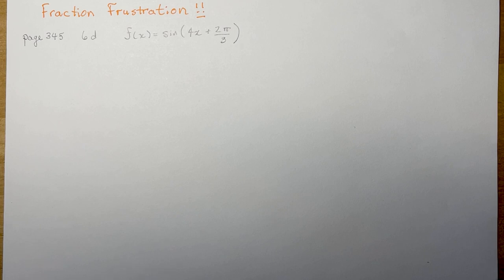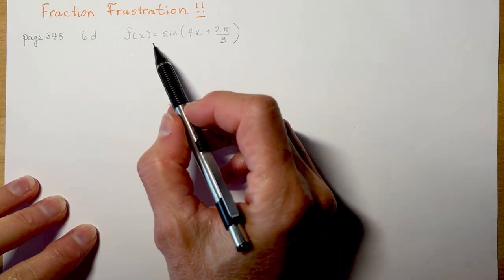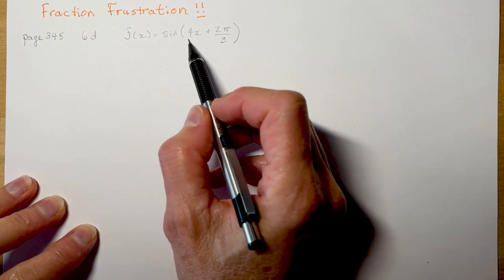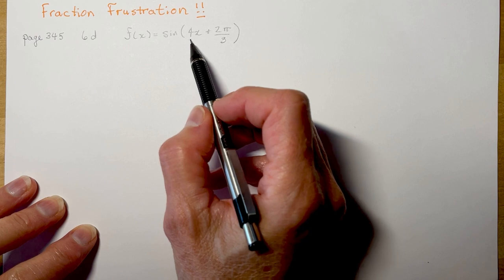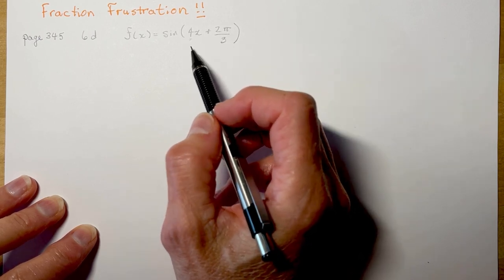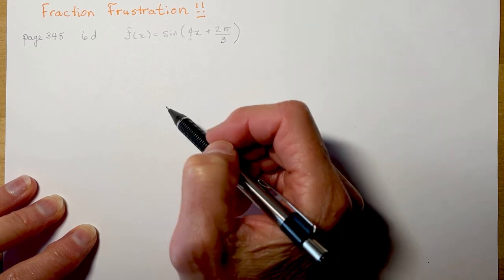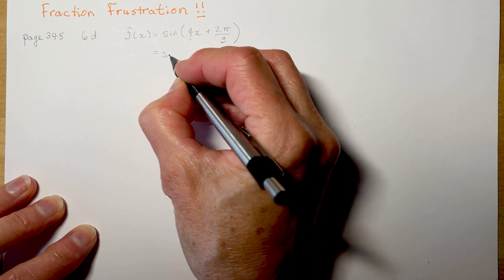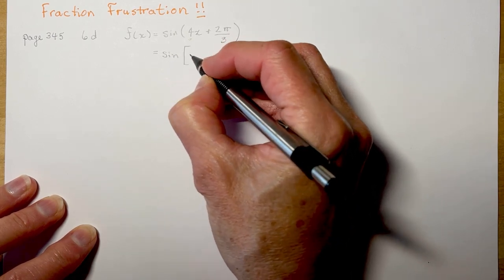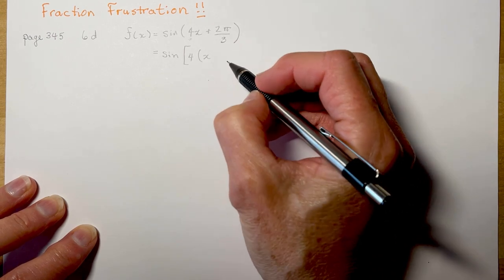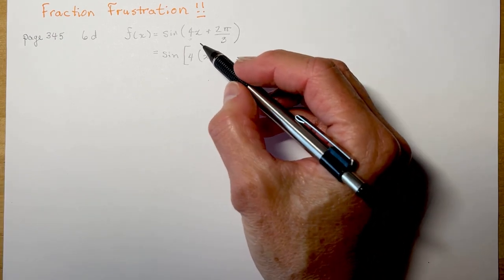If you've been in grade 11 or are now in grade 12, to do this properly and state the transformations, you need to factor out this 4 from the rest of the expression so you can tell which way the horizontal shift is and by how much. So the first thing you need to do is divide by 4. That may sound easy until you realize you're at this point where you have to divide 2π/3 by 4.